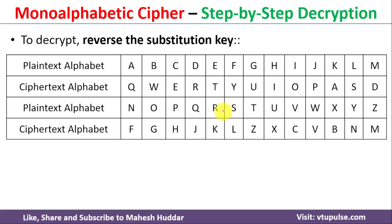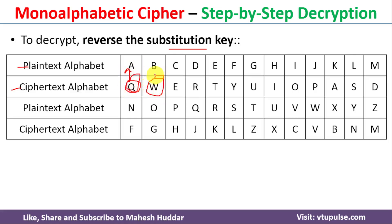Once we have the encrypted message, we decrypt it by reversing the substitution key. To find the decrypted message, we first look at the cipher text alphabet row and then look up the corresponding plain text alphabet. For example, if the encrypted letter is 'Q', we look at that position and find 'Q' becomes 'A'. Similarly, 'W' becomes 'B'. Now we find the decrypted message for 'QZZQEA'.